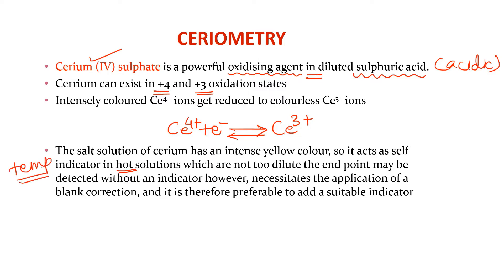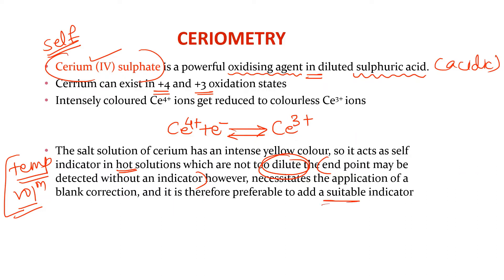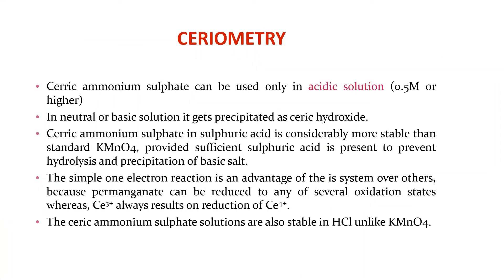The temperature of the solution matters. In solutions which are not too dilute, the end point may be detected without an indicator. The important point is that the end point can be detected without an indicator since the compound itself has color — it can act as a self-indicator, provided temperature and volume are maintained. Otherwise, if these conditions are not maintained, a suitable indicator is needed. Cerium sulfate can be used only in acidic medium because in neutral or basic solution it gets precipitated as ceric hydroxide.